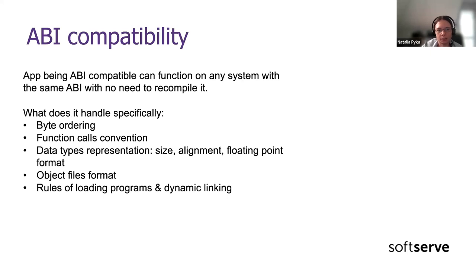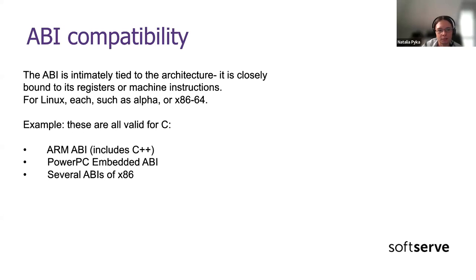Here are some details about what ABI agrees on — you can see many analogies to network protocols: byte ordering, calling conventions, type representation, format of object files, loading programs, and linking them dynamically. Everything that the C++ standard defines as 'just happens' is up to ABI to define how it actually happens. It is tied to both the architecture and the toolchain in use. There are several different ABIs which are all valid for C and partially C++, but they are not by default compatible with each other.